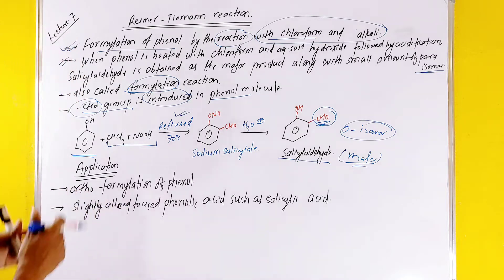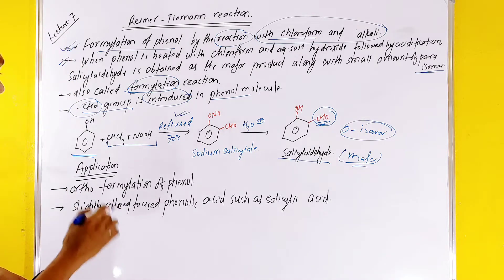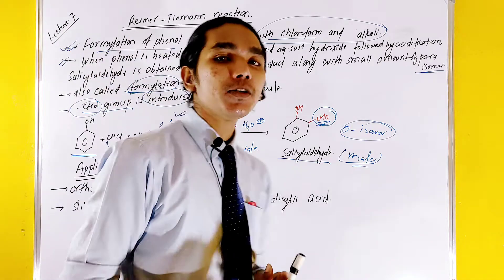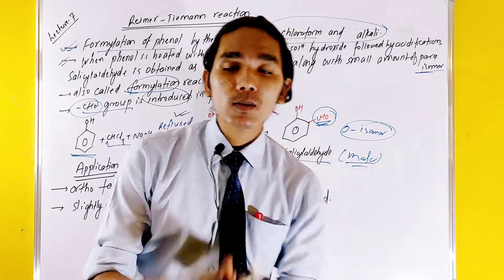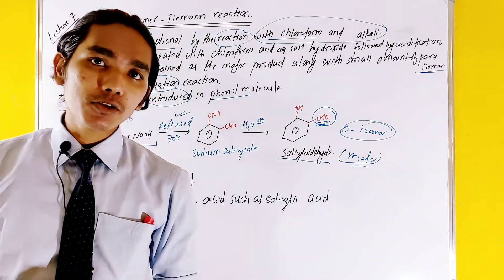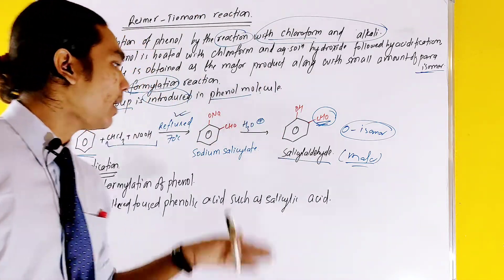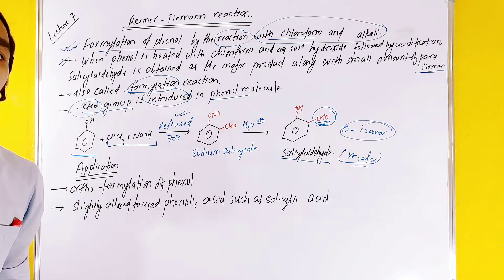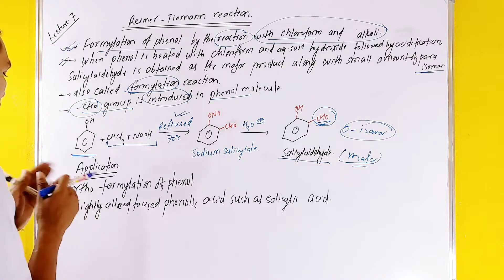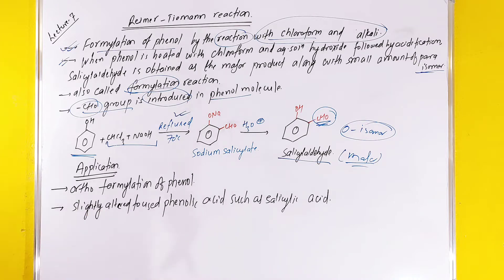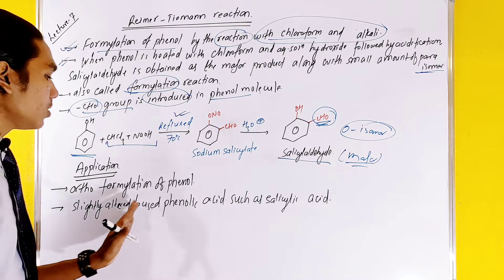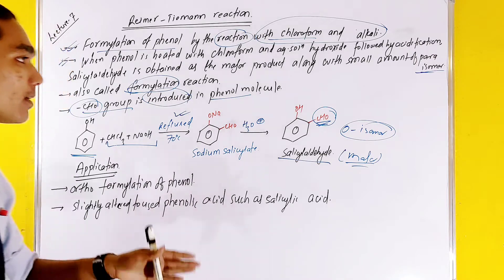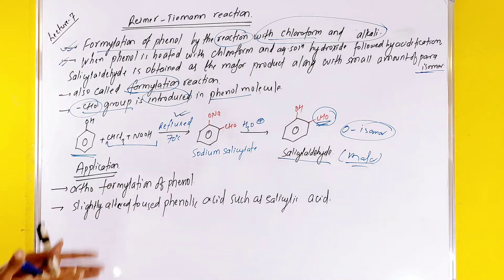This is the application. Here we can see ortho-formylation of phenol. Using phenol, we carry out the reaction to use phenolic acid or salicylaldehyde, which is the slightly altered reaction product.